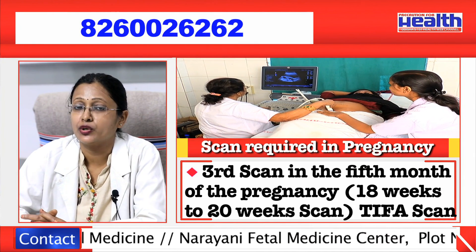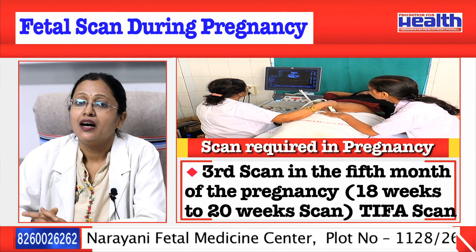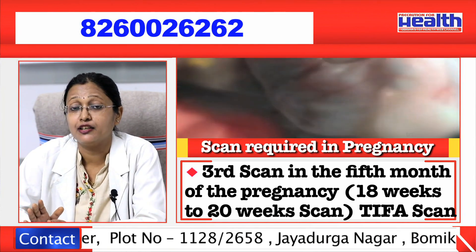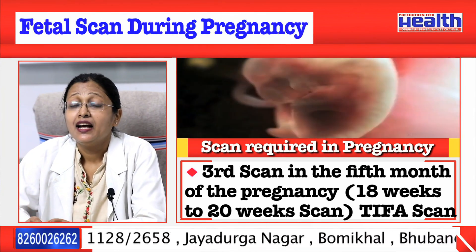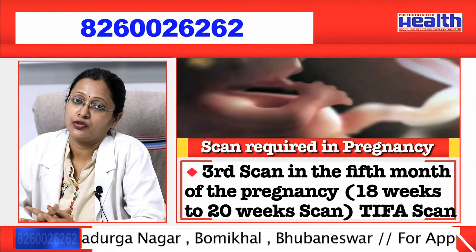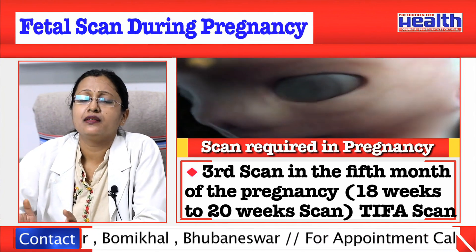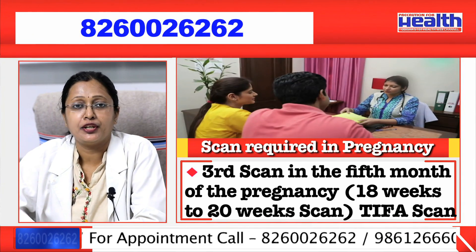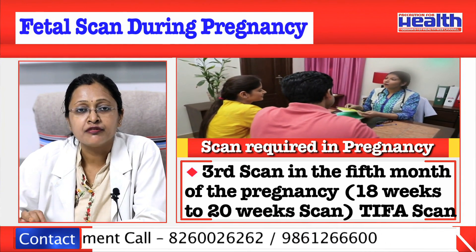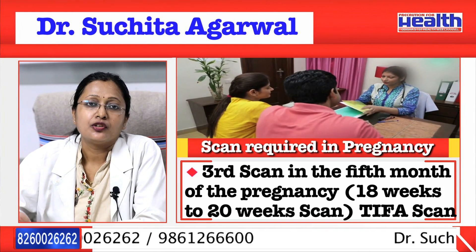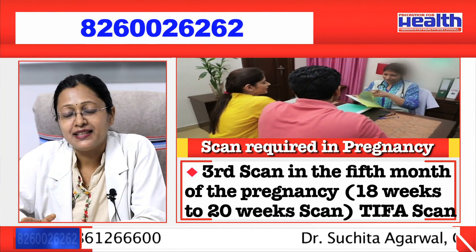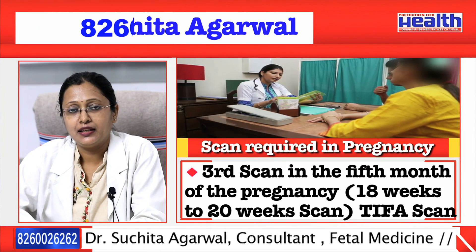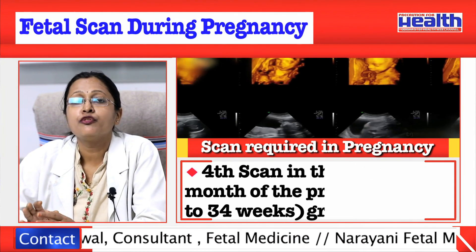The third scan is the fifth-month scan, or the 18 to 20 weeks scan, known as the TIFA scan or anomaly scan. A structural survey is done and all possible structural abnormalities can be detected. In addition, we look at soft markers for chromosomally abnormal babies. If the mother has missed the first trimester combined screening, we can do a genetic sonogram in this scan, look for soft markers of Down syndrome, and give a risk assessment. We can also offer the quadruple test at this time.